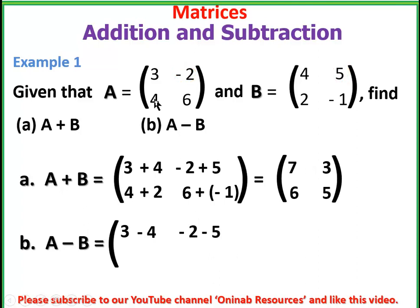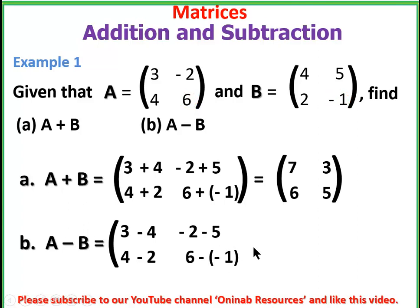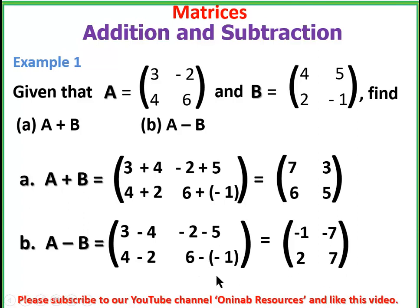The second row: four minus two for the first element, and six minus negative one for the last element. Simplifying: three minus four gives negative one, negative two minus five gives negative seven, four minus two gives two, and six plus one gives seven. That is the difference A minus B, which gives another matrix of the same order.